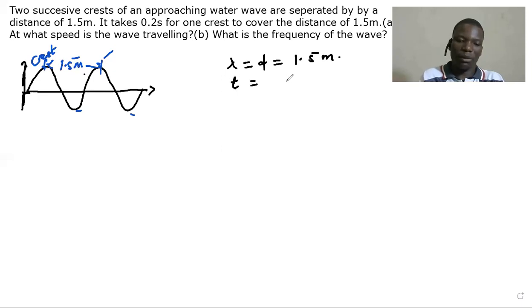And the time that we've been given is 0.2 seconds. So now, how do we calculate the speed of the traveling wave? We know that speed is actually distance being divided by time.